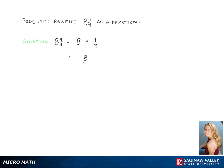Now the 8 has an invisible 1 underneath it, so in order to add these two fractions, we need the denominators to be the same. We do this by multiplying 8 over 1 by 9 over 9. Doing so gives us 72 over 9 plus 4 over 9.